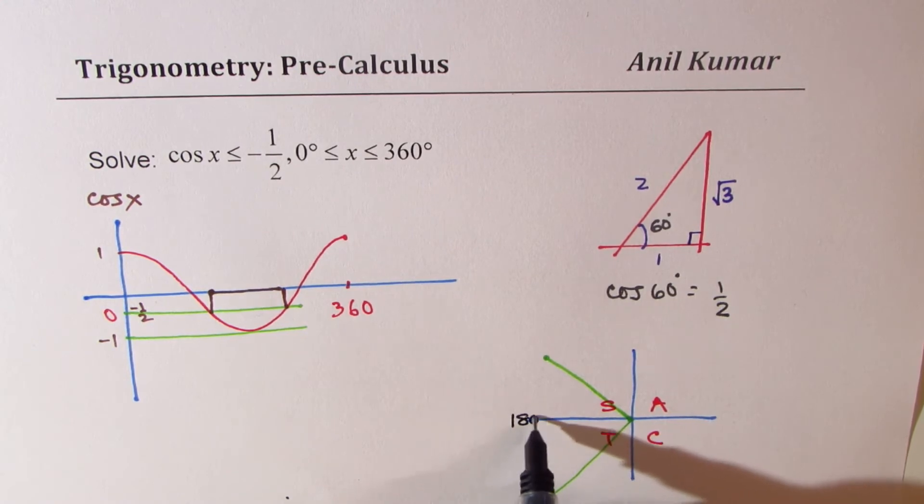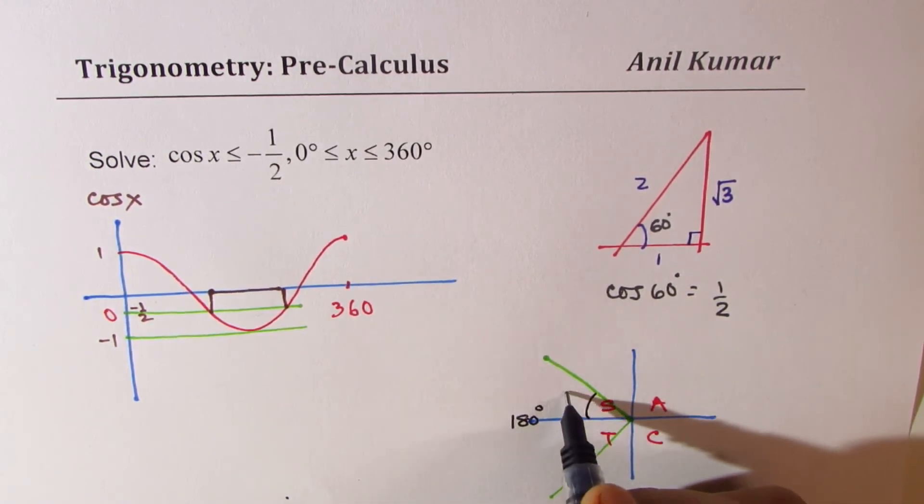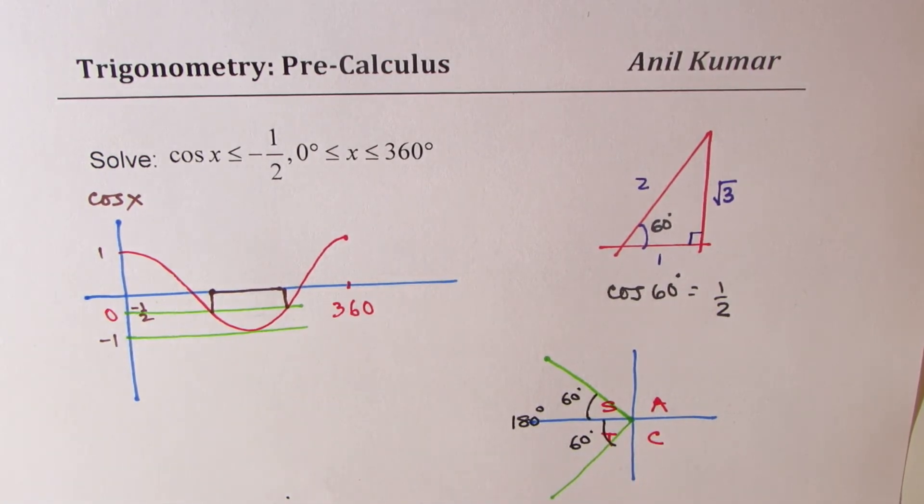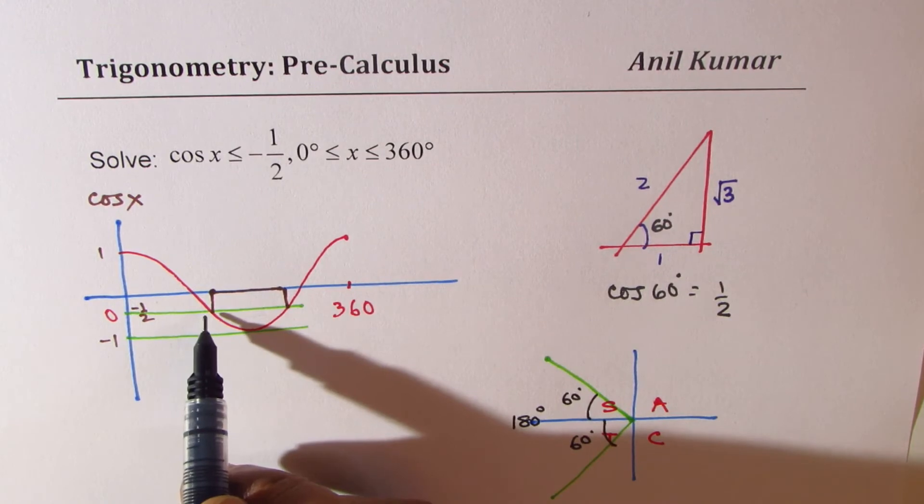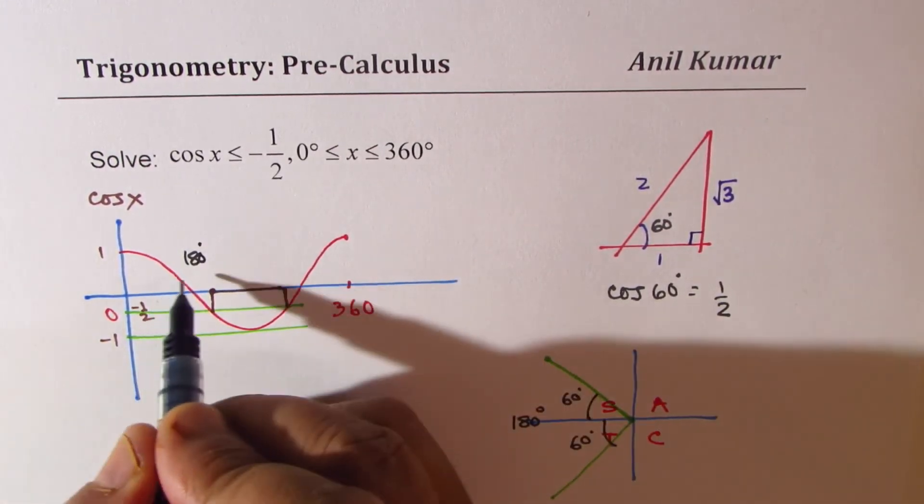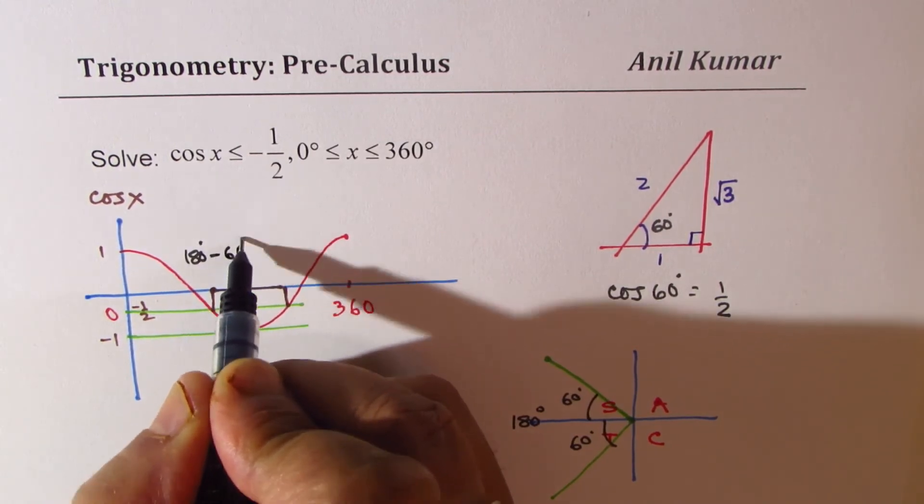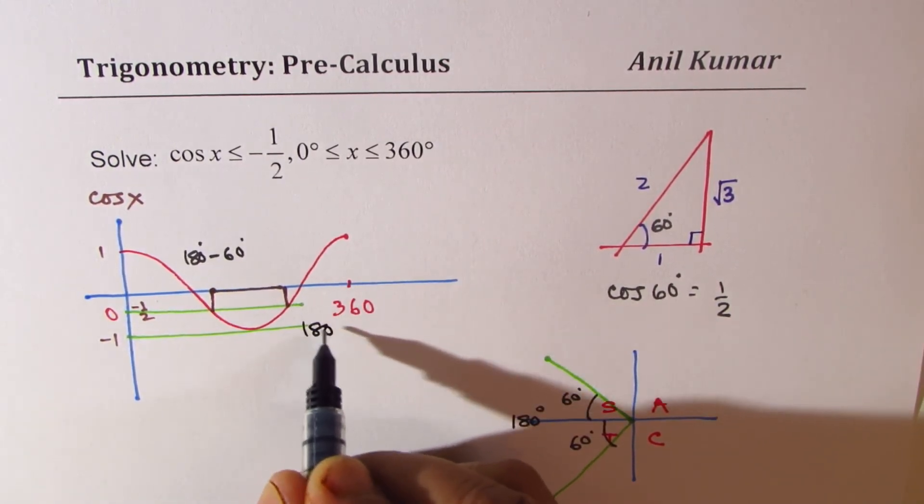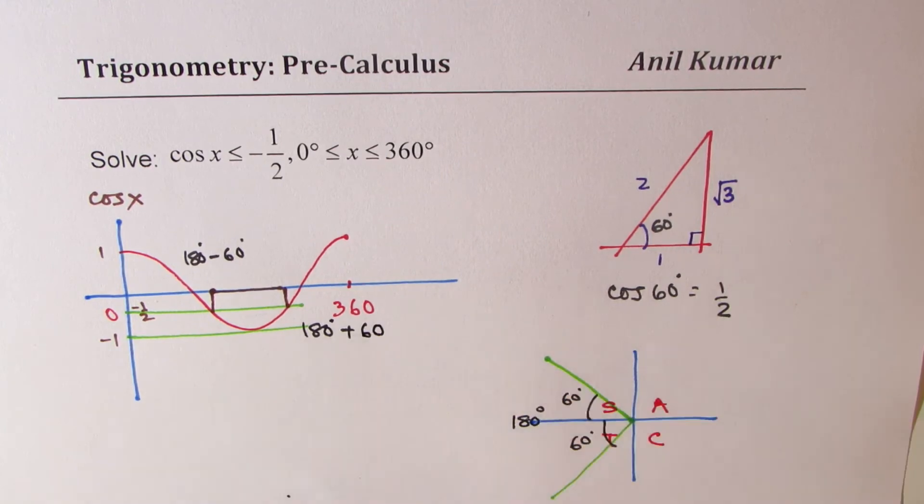If this is 180 degrees, here the angle is 60 degrees, acute angle. So cosine is negative. What we find is that this is 180 degrees minus 60 degrees, and the other one is 180 degrees plus 60 degrees.